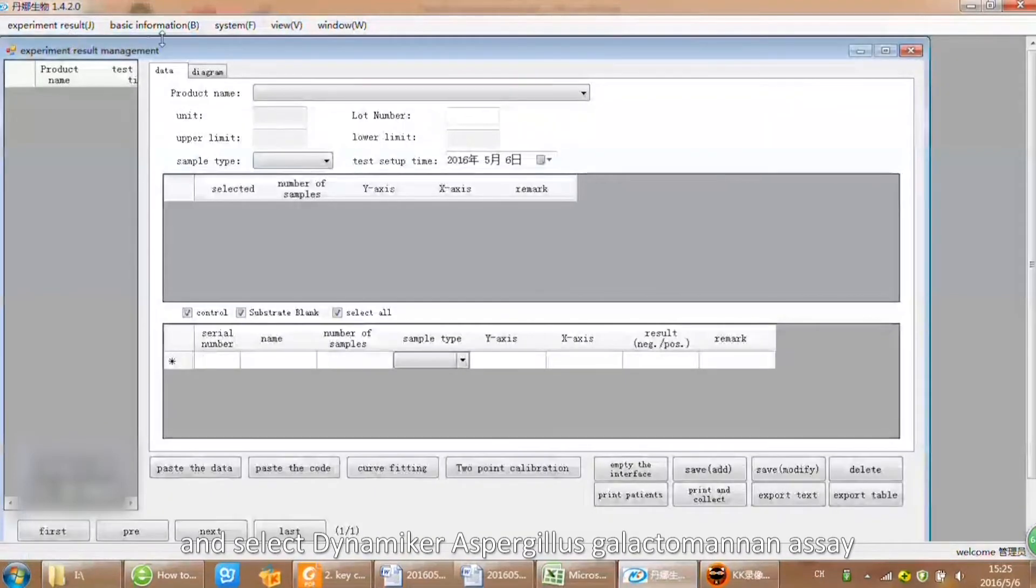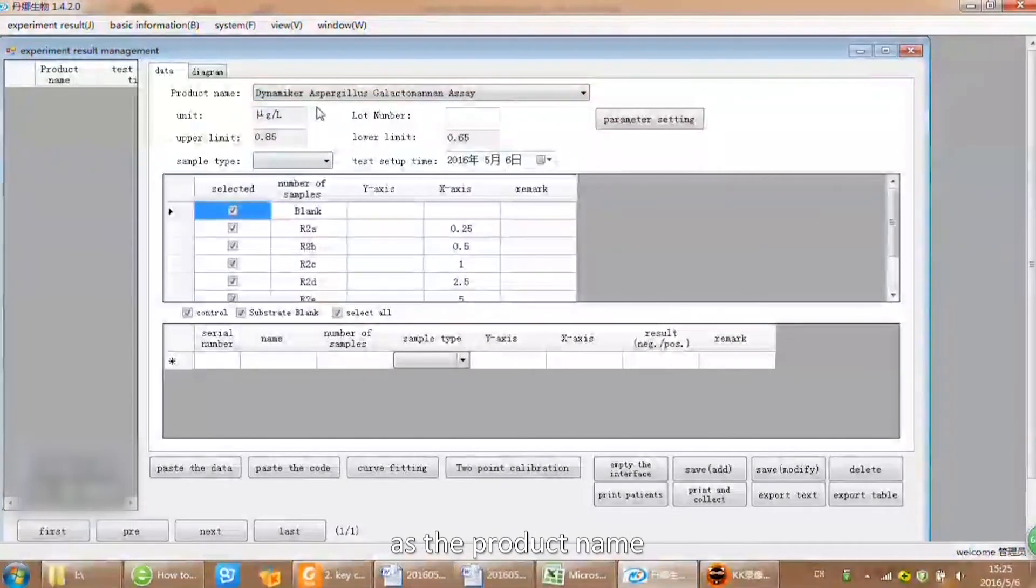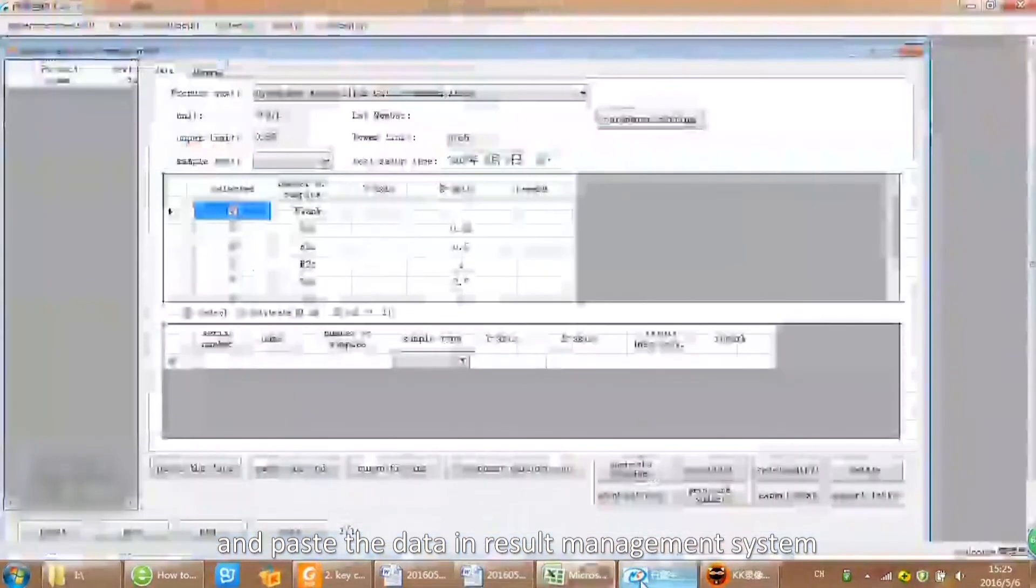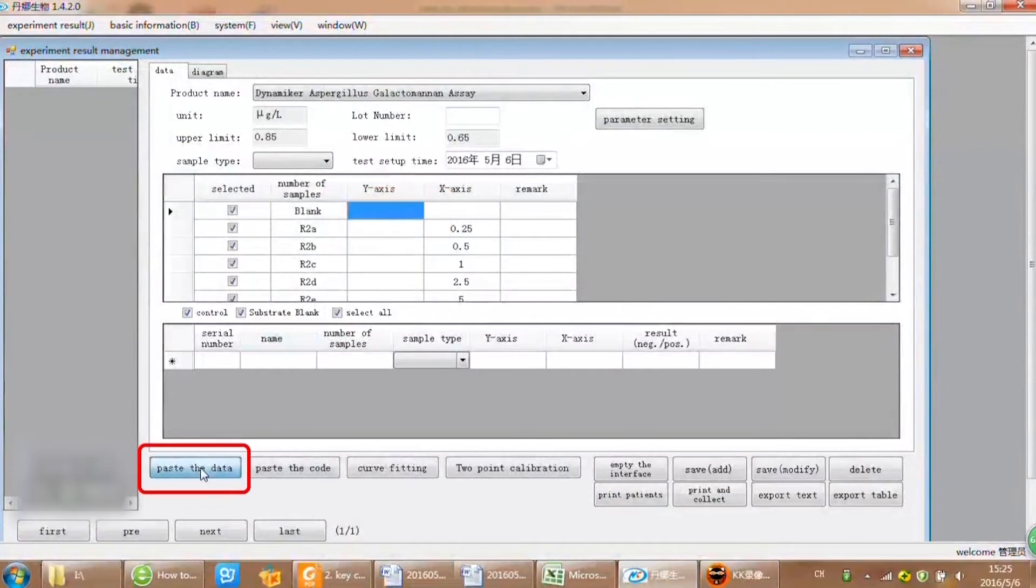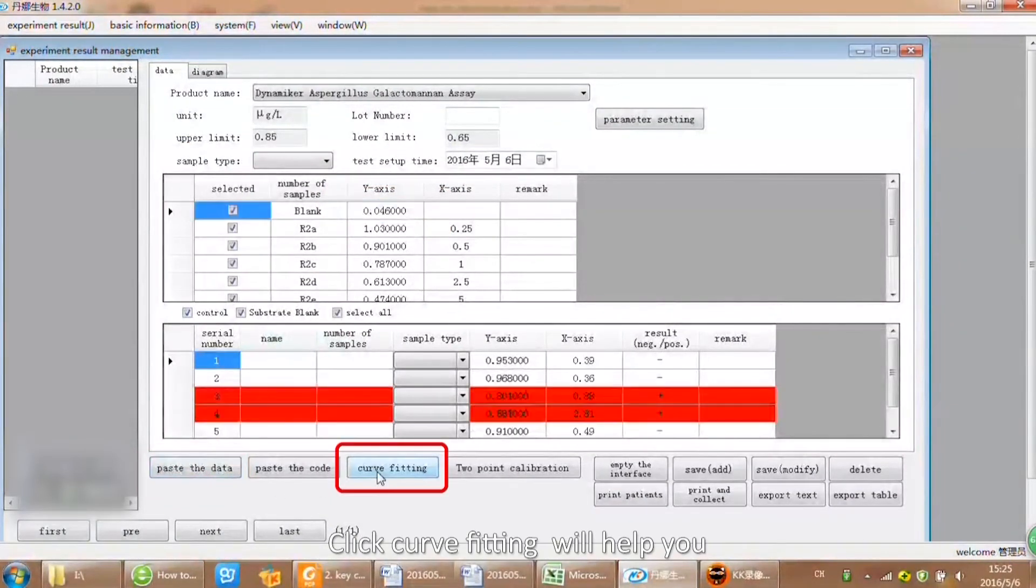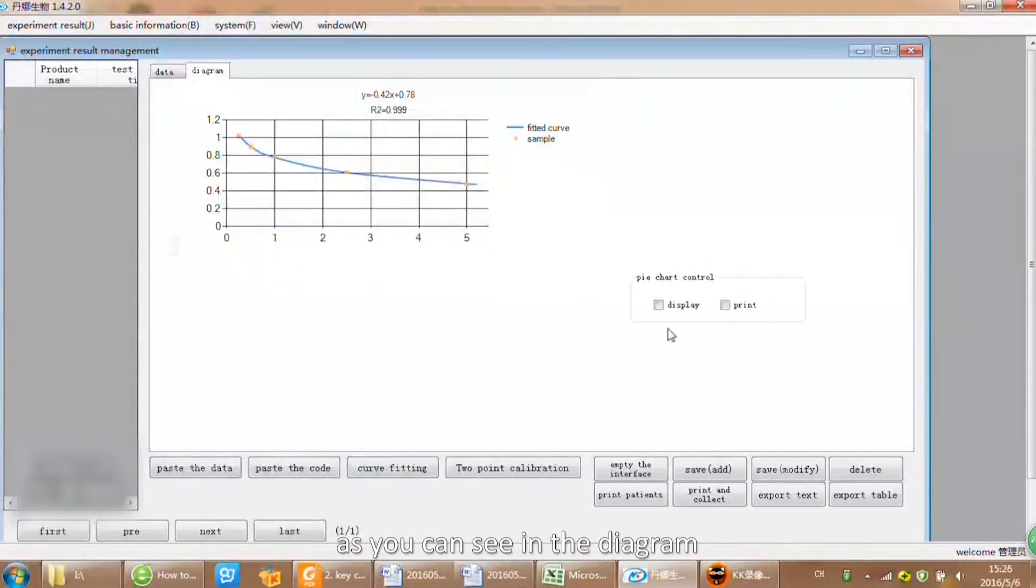Open the Dynamica experiment result management system and select the Dynamica Aspergillus Galactomannan assay as the product name. Copy the absorbance in Excel and paste the data in result management system. Click curve fitting will help you to construct the standard curve as you can see in the diagram.